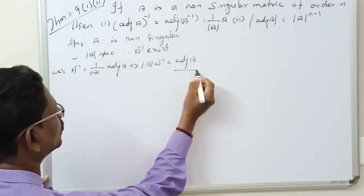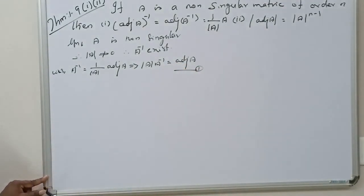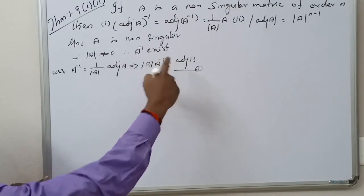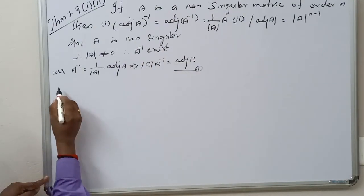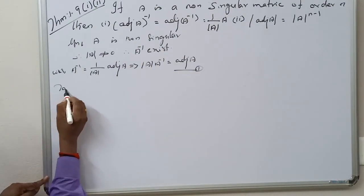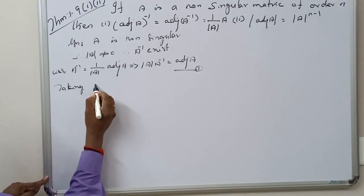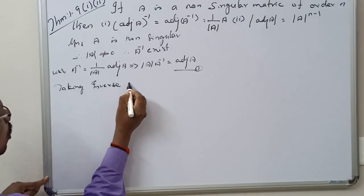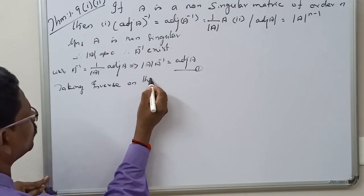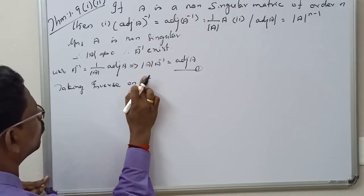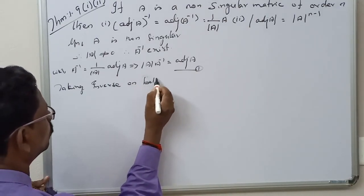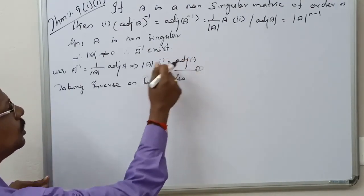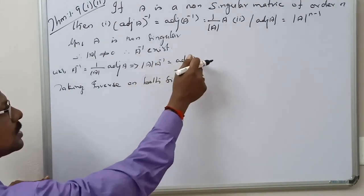This implies, cross multiplying, determinant of A into A inverse equals adjoint of A. This is equation number one. Now taking inverse on both sides.